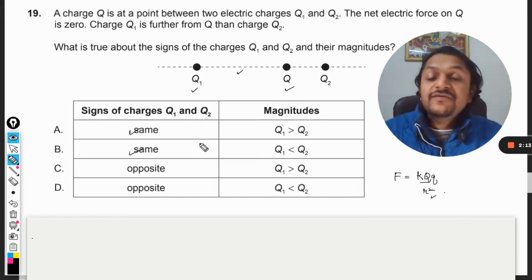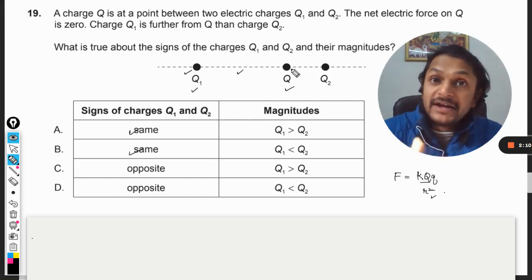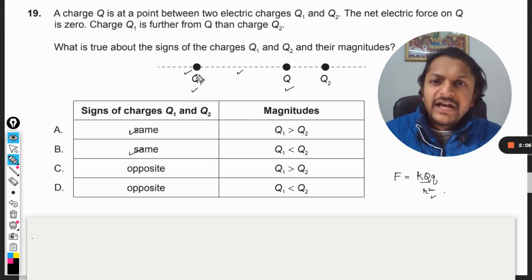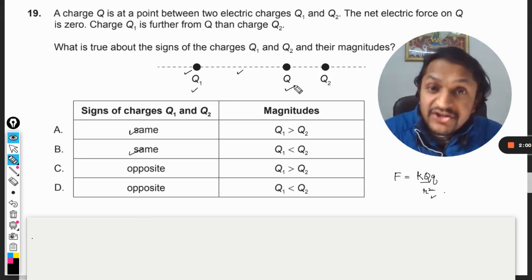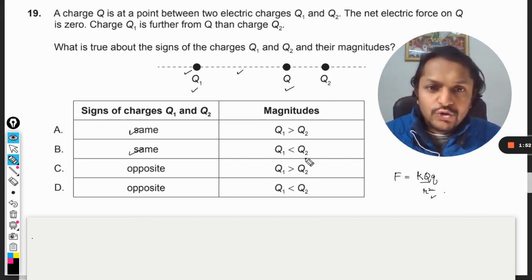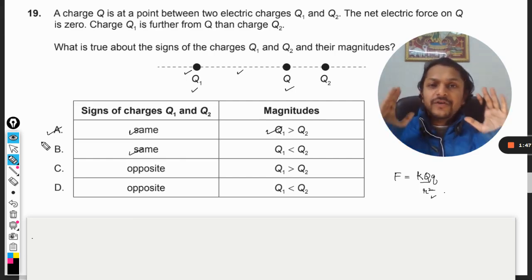When this charge is away, even then this charge is able to provide the same magnitude of the force. How is that possible? If this charge becomes bigger and this charge, in spite of being nearer to q, is not able to provide the bigger force, it means q2 has to be lesser. So q2 will be lesser than q1. So my answer will definitely be B.